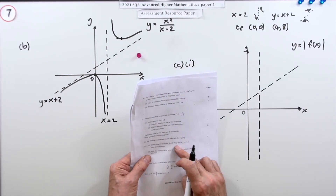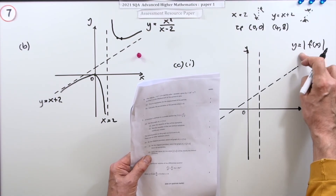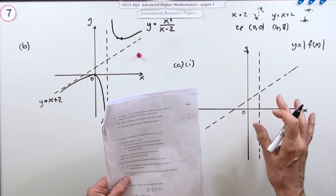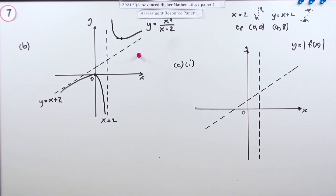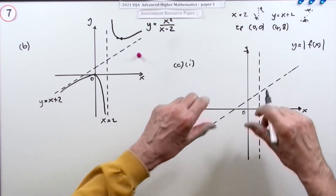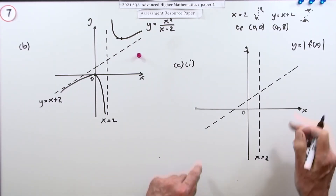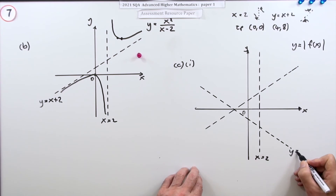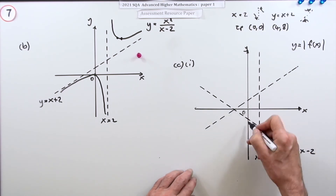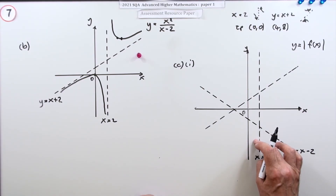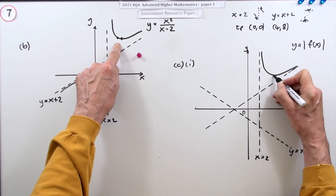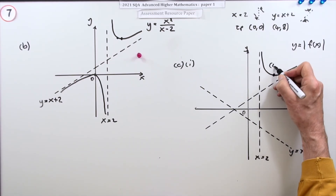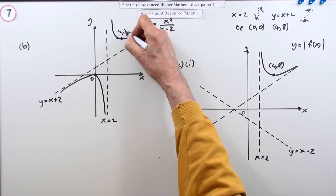Part c: sketch the graph of y equals the absolute value of f(x) - the modulus. This means anything negative gets plotted as positive, and positives stay as they are. You must show all the asymptotes. The vertical asymptote x equals 2 remains the same. The negative part of the graph gets flipped over the x-axis, giving a new asymptote at y equals x minus 2.